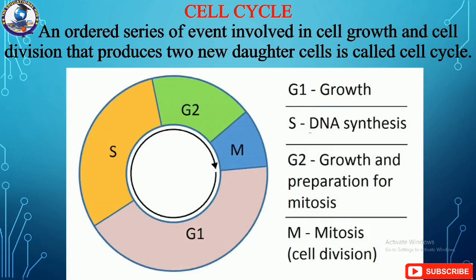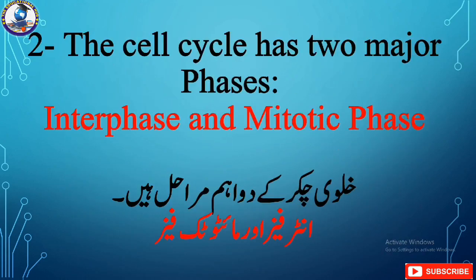First of all, what is cell cycle? Cell cycle is an ordered series of events involved in cell growth and cell division that produces two new daughter cells. This is called the cell cycle. Basically, the cell cycle has two major phases: the first one is interphase and the second is mitotic phase.